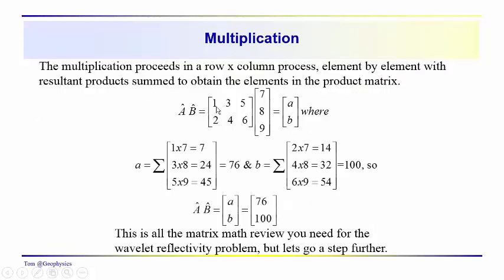Let's see how it works. If A is [1, 3, 5; 2, 4, 6] and we have a column vector [7, 8, 9], the first output term is one times seven plus three times eight plus five times nine, giving seven plus twenty-four plus forty-five equals seventy-six. The second term is two times seven plus four times eight plus six times nine: fourteen plus thirty-two plus fifty-four equals one hundred. So the product gives us the matrix [76, 100].